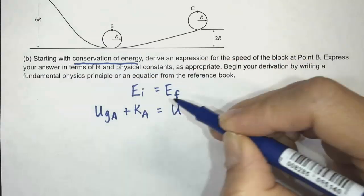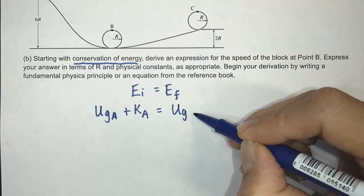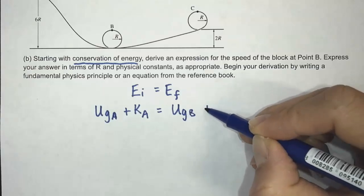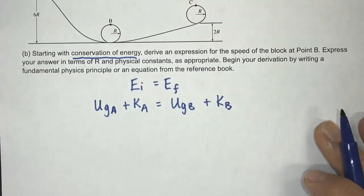And initially we have some potential energy. I'm going to also include kinetic energy. I know it's not moving, but just to be complete, sometimes you do start off with kinetic energy. And then after, once it gets to location B, then you have UgB, it's got potential, and you do have some kinetic energy.